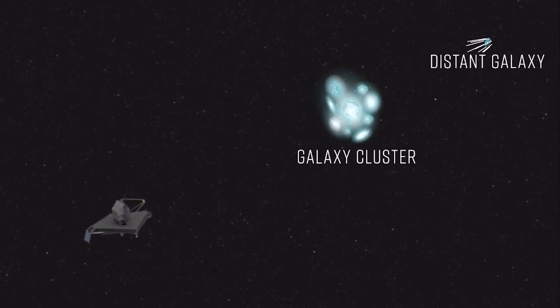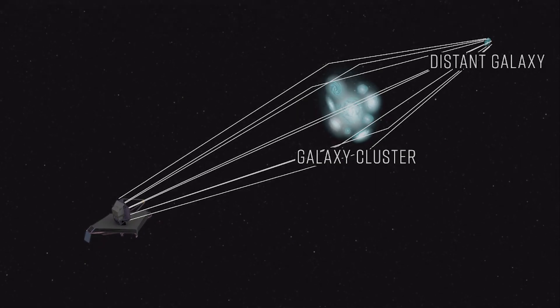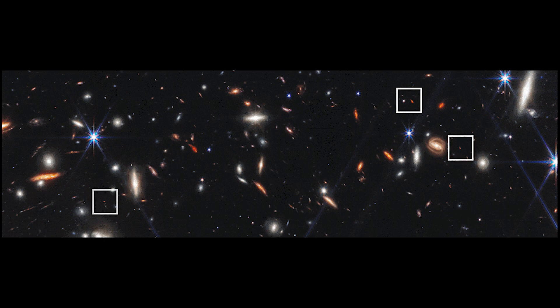The cluster's mass makes it a gravitational lens, which both magnifies and distorts the appearance of background galaxies. Among the faintest galaxies behind the cluster were a trio of compact infrared objects that looked like they could be distant relatives of green peas.